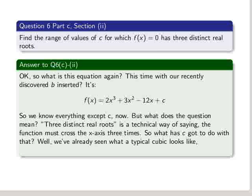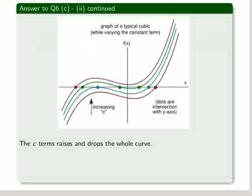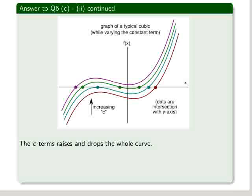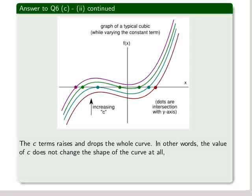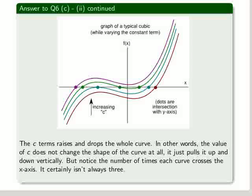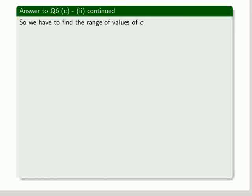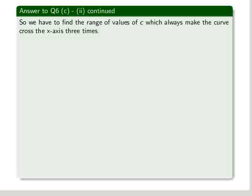We've already seen what a typical cubic looks like. Let's take another look. This time choosing different values for c. The c term raises and drops the whole curve. In other words, the value of c does not change the shape of the curve at all. It just pulls it up and down vertically. But notice the number of times each curve crosses the x-axis. It certainly isn't always three. Of the four curves given here, only the green one crosses the x-axis three times. So we have to find the range of values of c, which always make the curve cross the x-axis three times.